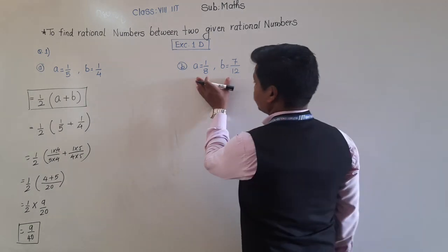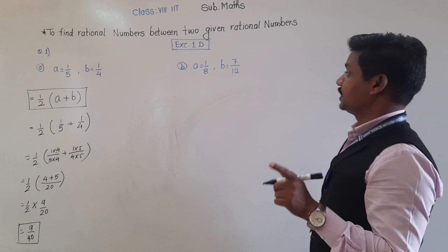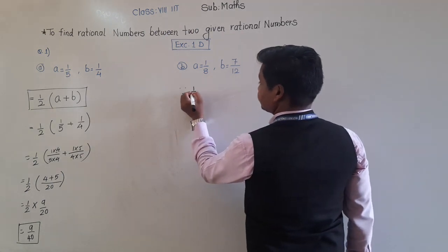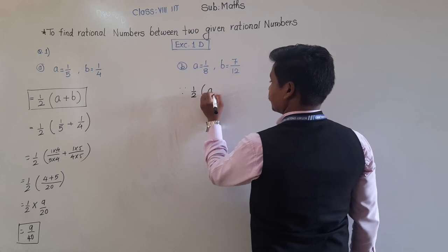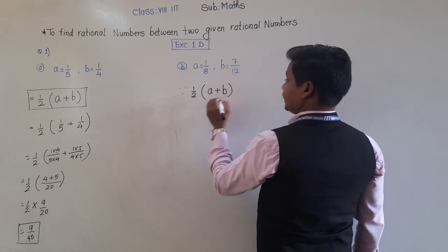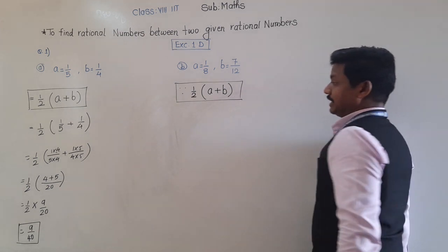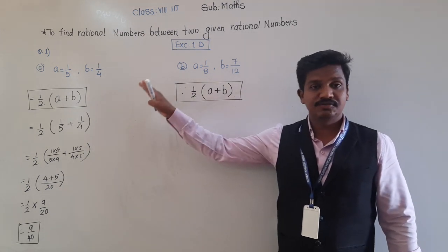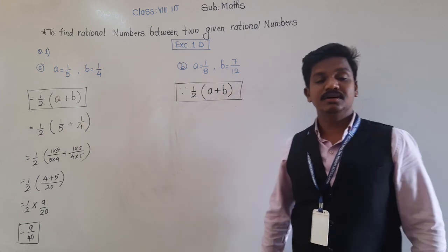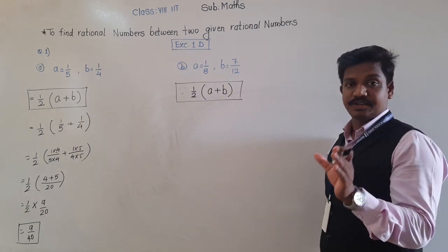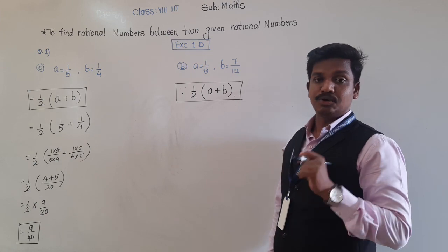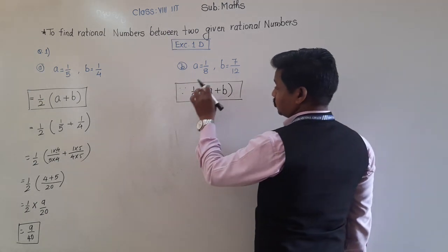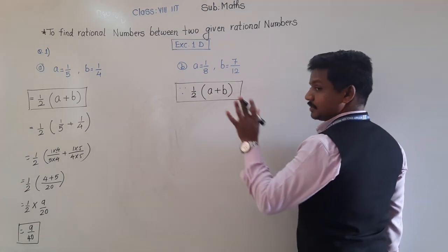Similarly, for the second example, we also find a rational number — this time between 1/8 and 7/12 — using the same formula: (1/2)(A + B). Note that this formula is the same as the formula for average: (A + B)/2.